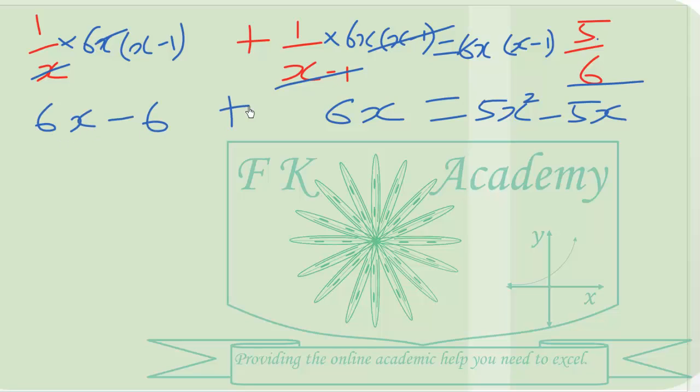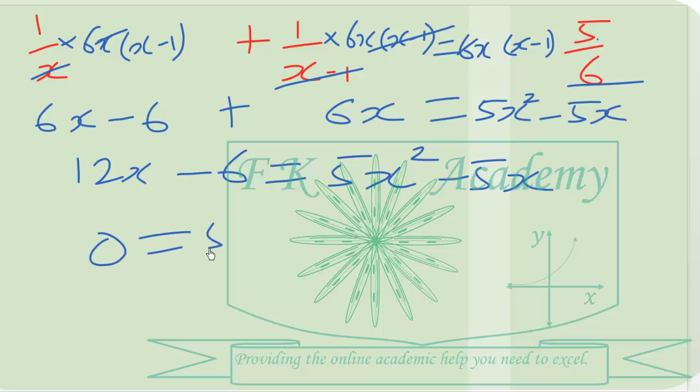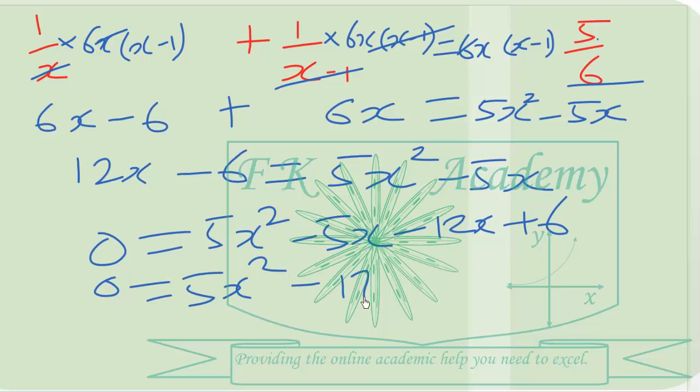So we can now group like terms and write in standard quadratic equation form. So when we do that we are obtaining 5x squared minus 5x minus 12x plus 6. And this can be simplified to obtain 5x squared minus 17x plus 6. Now the product 5 times 6 will give us 30.